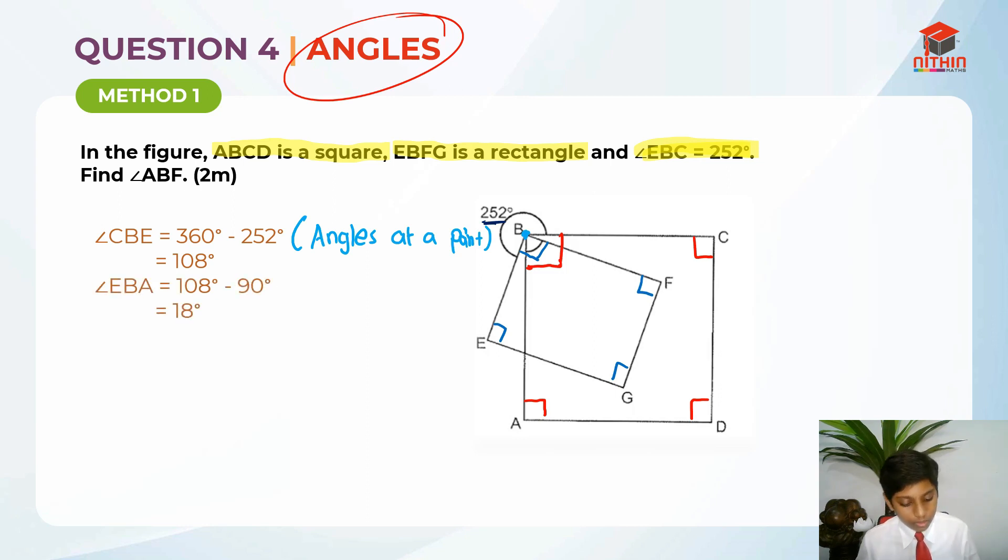Next, I took angle EBA. So, it's basically 108 degrees minus 90 degrees, which is 18 degrees. Where is angle EBA? Let's find that out first. EBA is here, EB and A. Angle EBA is this small area over here. How I took 108 degrees? Because, you know, 108 degrees is this whole big area, right? 108 degrees minus this red 90 degrees for the square, we will get this 18 degree angle over here, which is angle EBA. I hope you have understood so far.